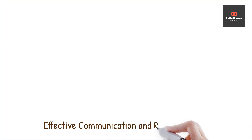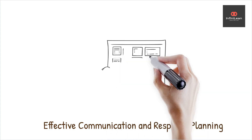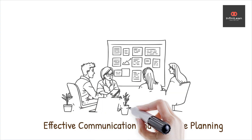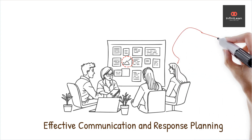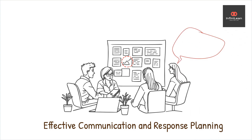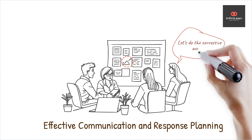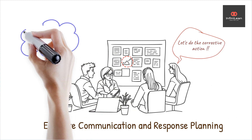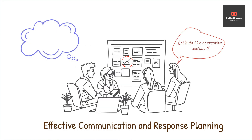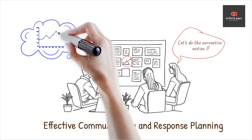Communication plays a significant role here as well. Regular updates and feedback loops are essential to keep everyone informed and involved. Moreover, the Control Phase also involves setting up a response plan. This plan includes actions to be executed if the process shows signs of returning to its previous ineffective state. By having a predetermined response, teams can react quickly and efficiently, minimizing disruption and preventing any slip in quality.